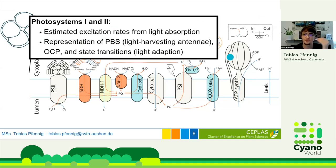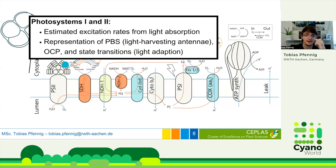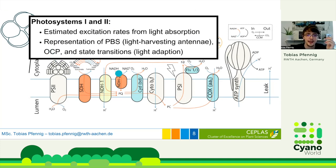The two photosystems absorb the light and drive photosynthesis. We estimate the excitation rates for these photosystems from the simulated light absorption. For that, we also include a description of the phycobilisomes — the light harvesting antennae — but also of light adaptation mechanisms like the orange carotenoid protein and state transitions, which will be important later.